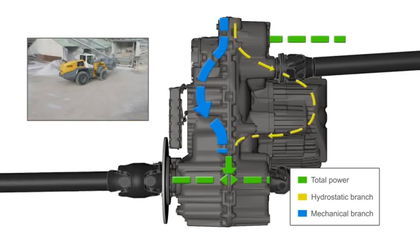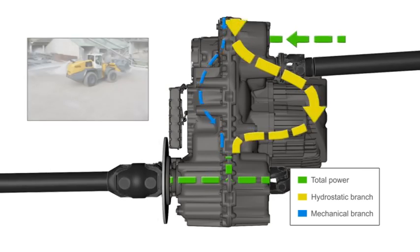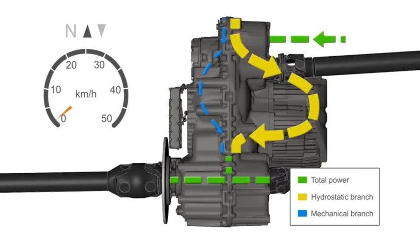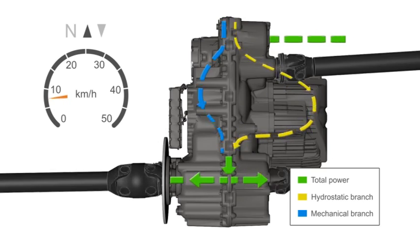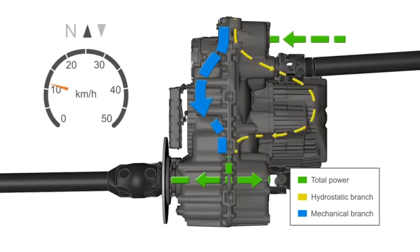The gearbox has two operating ranges. The first goes up to approximately 10 km per hour, and the second up to the final speed of 40 km per hour.